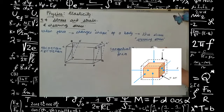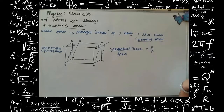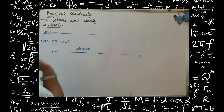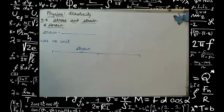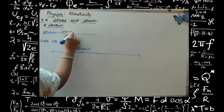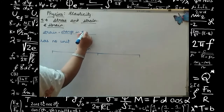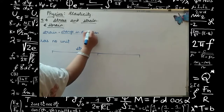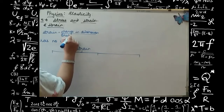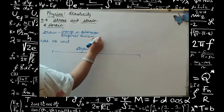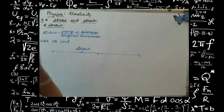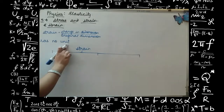The formula for shearing stress is nothing but how much force is applied per unit area — F/A. Now we have completed studying about stress and will see the second part, which is strain. Strain is nothing but change in dimension per unit original dimension of a body — how much the dimensions of the body change per unit original dimension. A property of strain is that it has no unit. There are three types of strain: longitudinal strain, tensile strain, and shearing strain.